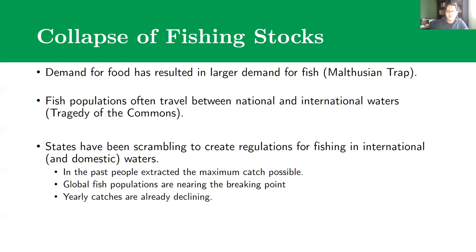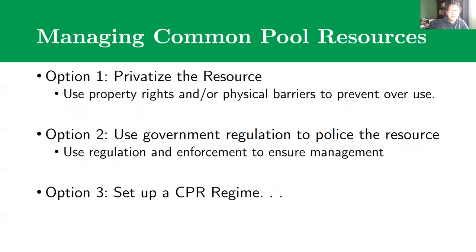As a result, there's been a push to figure out some way to get states to rein in consumption — it's no longer sustainable for countries to send their fishing fleets out to extract the maximum catch possible. Something needs to be done so that yearly catches are held in check enough to allow fish to reproduce and populations to sustain themselves. In general, when dealing with a common pool resource problem, there are three possible strategies.